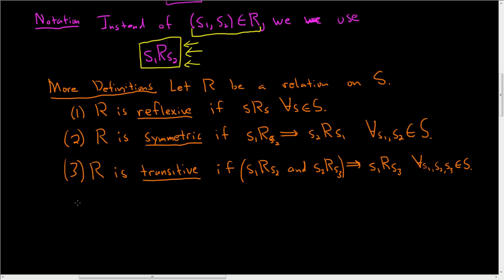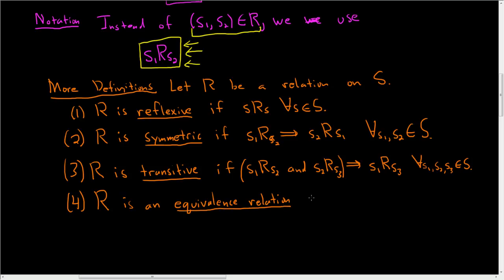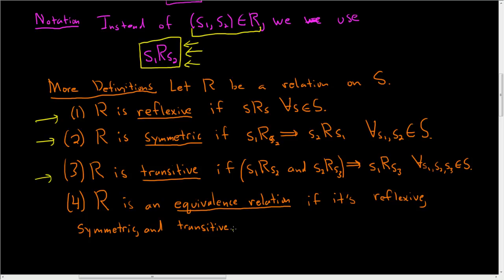Those are the basic properties of relations. For our purposes — group theory — we only really need these three for now. R is an equivalence relation if it has the following three properties: it's reflexive, symmetric, and transitive. If R satisfies all three, we say R is an equivalence relation.